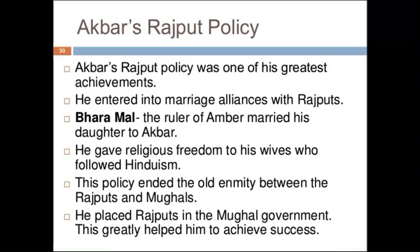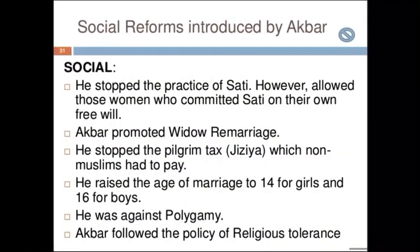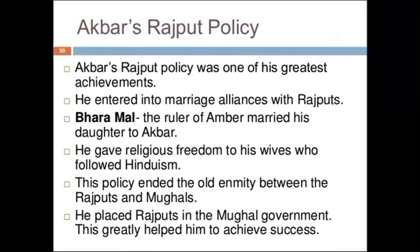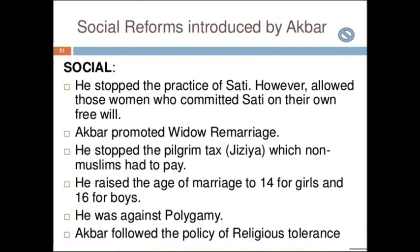He placed both Mughals and Rajputs in the Mughal government, which greatly helped achieve success. There were many social reforms brought by Akbar as well. For example, he stopped the practice of Sati. He promoted widow remarriage and raised the age of marriage for girls from 14 to 16. He was against polygamy and had very good religious tolerance.